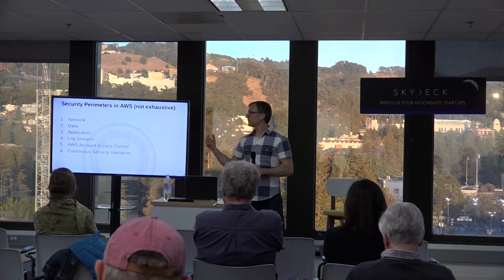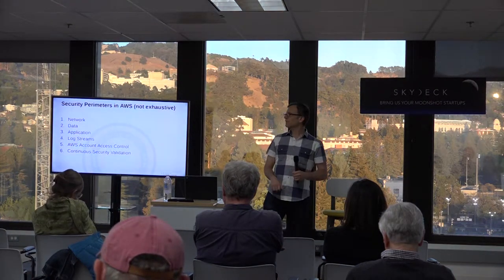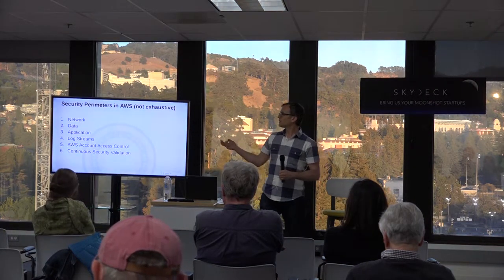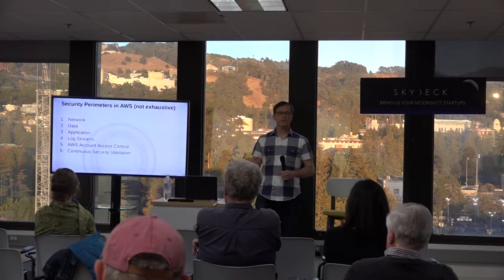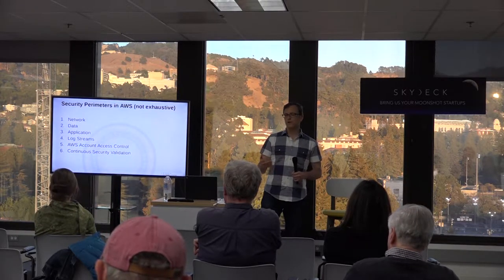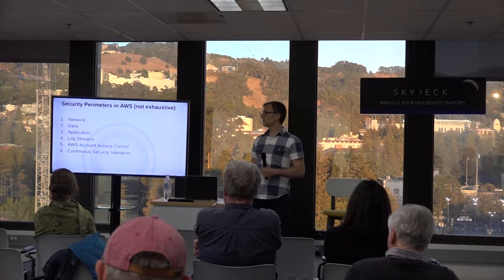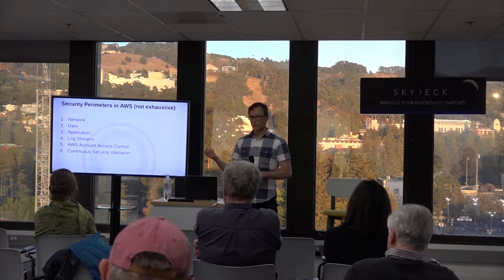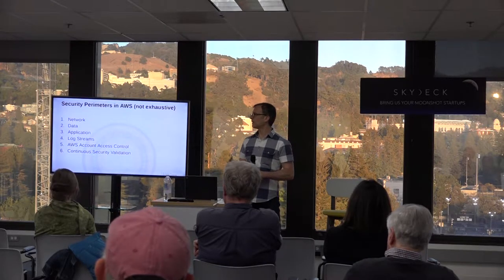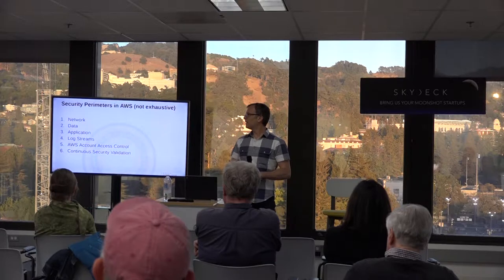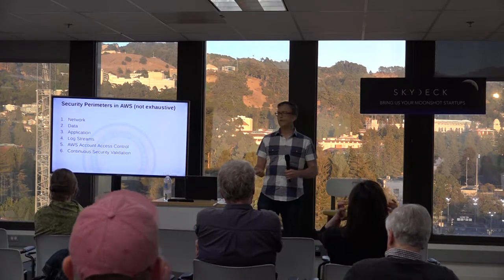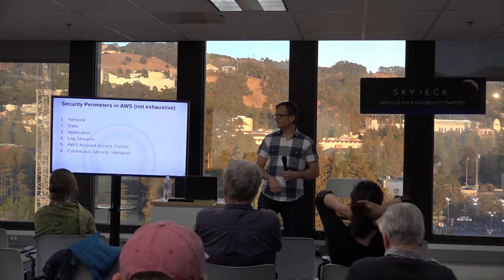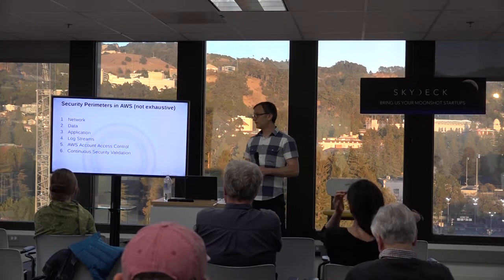I want to go through the security perimeters we'll be talking about, just to make sure everybody is on the same page. We've got security at layer three and layer four, and some tools that AWS provides to analyze at higher layers. At the data layer, we're mostly talking about encryption of data, and we'll also talk about management of secrets.